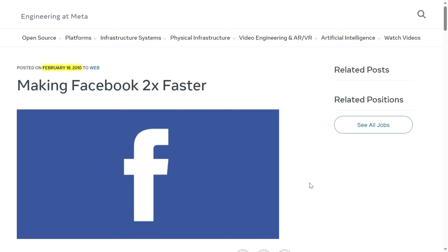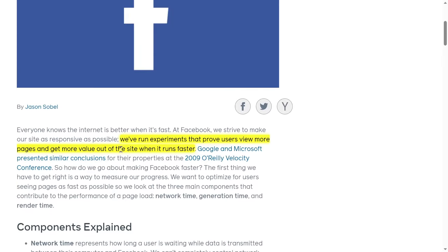The following year, in 2010, they announced they were, quote, making Facebook 2x faster. Why were they doing this? They said they'd run experiments, which were apparently corroborated by Google and Microsoft, that proved users viewed more pages and got more value out of their site when it ran faster.